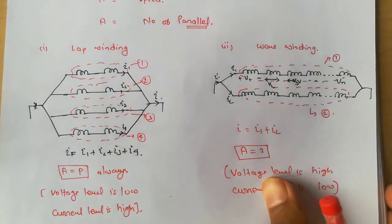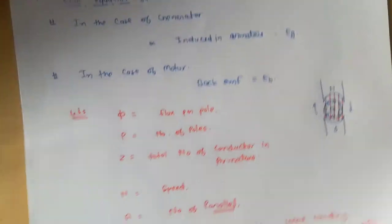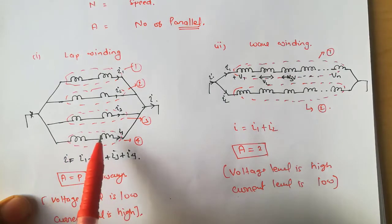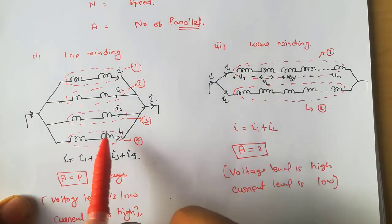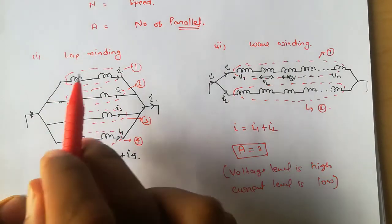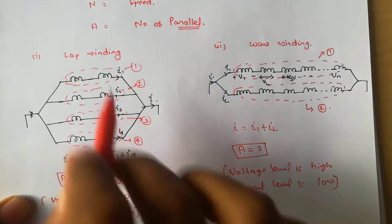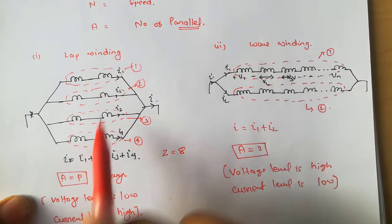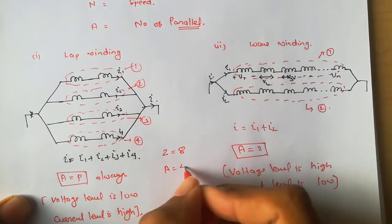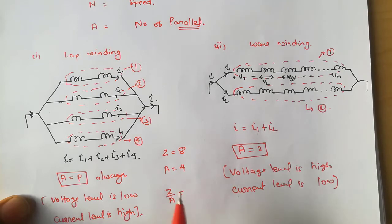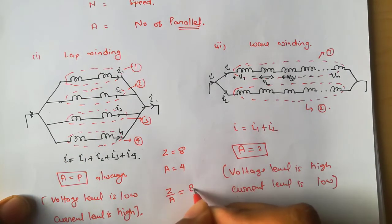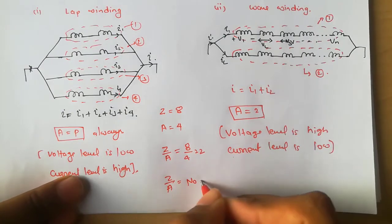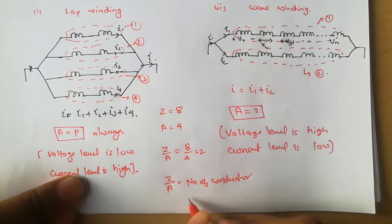Now moving on to the EMF equation. Consider a 4-pole motor with 8 total conductors and 4 parallel paths, so Z equals 8 and A equals 4. The value of Z divided by A gives the number of conductors in each parallel path — here 8 divided by 4 equals 2. So Z/A represents the number of conductors in each parallel path.